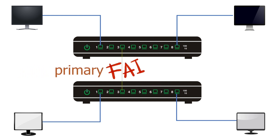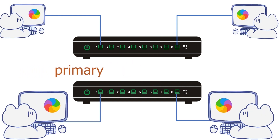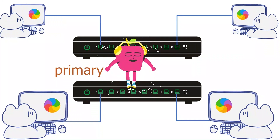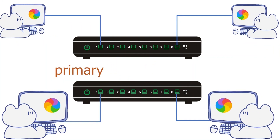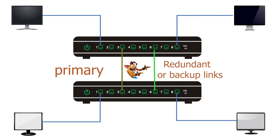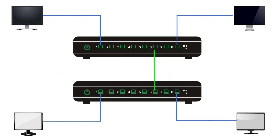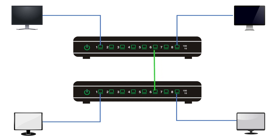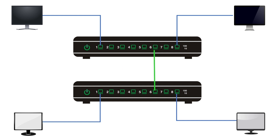However, if the primary link fails, it brings the entire network down. You can avoid it by using more than one connection between switches. All additional connections are called redundant or backup links. A backup link keeps the network running when the primary link fails. It is meaningful only when the primary link fails. If the primary link is up, it creates a switching loop.